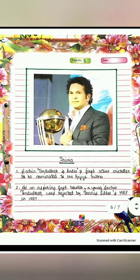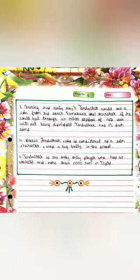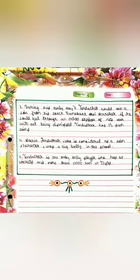Trivia. Sachin Tendulkar is India's first active cricketer to be nominated to the Rajya Sabha. As an aspiring fast bowler, a young Sachin Tendulkar was spotted by Dennis Lillee at MRF in 1987 during his early days. Sachin would win a coin from his coach Ramakant Achrekar if he could bat an entire session in the nets without getting dismissed — Tendulkar has 13 such coins. Sachin Tendulkar, who is considered a gentleman of the game, was reportedly a big bully in school. Tendulkar is the only player who has 40 wickets and more than 10,000 runs in Test cricket.